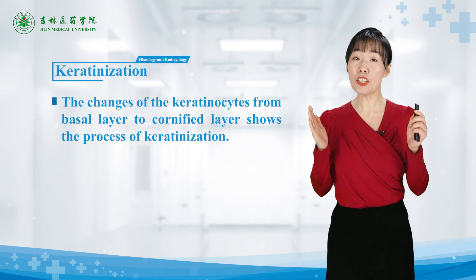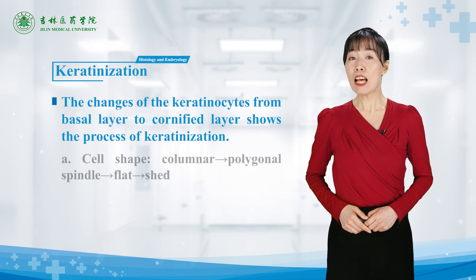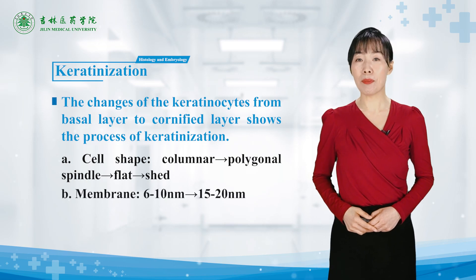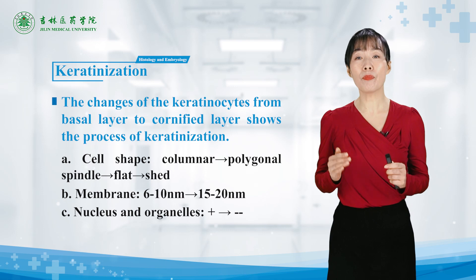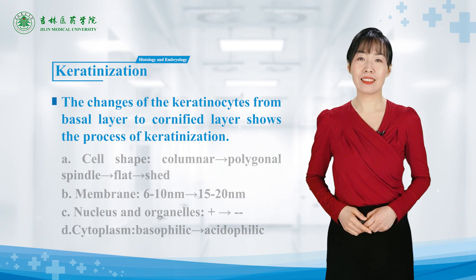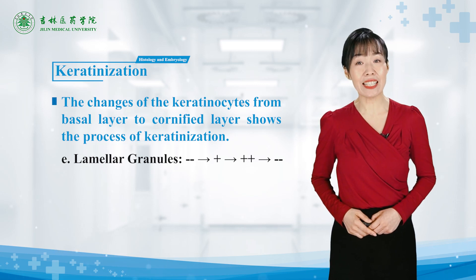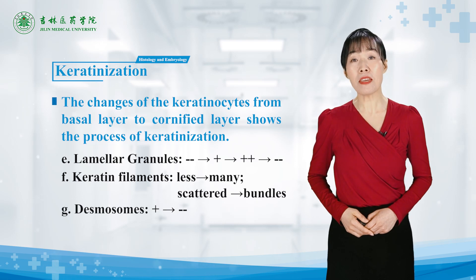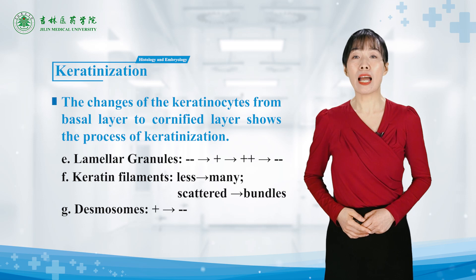The changes of keratinocytes from the basal layer to the cornified layer show the process of keratinization. Cell shape changes from columnar to polygonal, spindle, flat, and finally shed off. The membrane becomes thicker, and the nucleus and organelles disappear gradually due to lysosomal hydrolytic enzymes. Cytoplasm changes from basophilic to eosinophilic. Lamellar granules disappear in the stratum spinosum and gradually become homogeneous. Keratin filaments increase in amount and molecular mass. Desmosomes disappear last. The process of keratinization is also the process of apoptosis of keratinized cells.